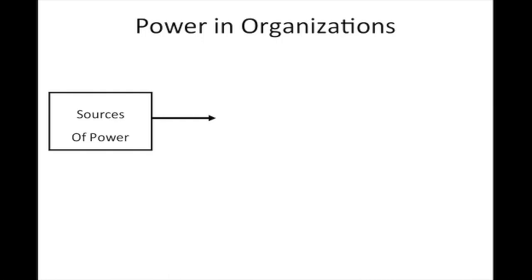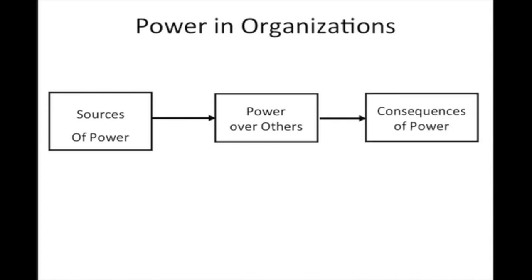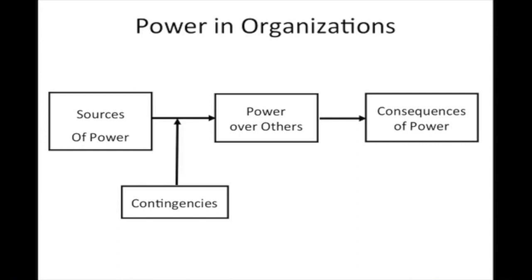First we'll start with the model — the diagrams, all of the major components of the expression and use of power in an organization. We'll start with sources of power. We have to recognize that having power and using power are often two different things. The capacity of a person, a team, or an organization to influence others is a source of power. Using that power is up to the discretion of the person, organization, or team. And then there are consequences related to the expression or use of power, and of course there are always contingencies.